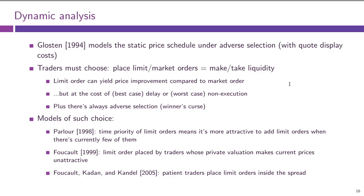If a trader submits a market order, they get their order executed pretty much immediately, but at a price currently offered by the market. Submitting a limit order can get a better price — it will be on the other side of the spread. But it's not a cure-all because there is a cost: in the best case, the trader who submitted a limit order will have to wait until their order is executed, and there is always a non-execution risk.